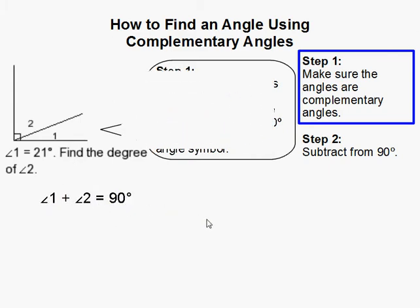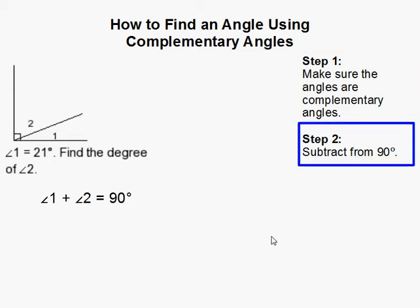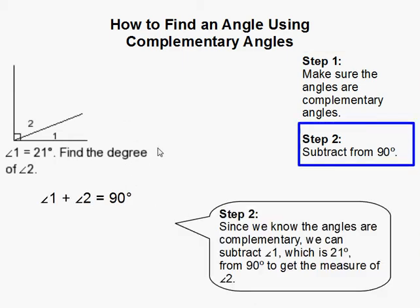So I wrote that here. Then we need to subtract from 90 degrees. And the one we need to subtract is of course the one we're given, in order to find the one we don't know.